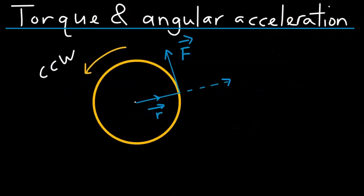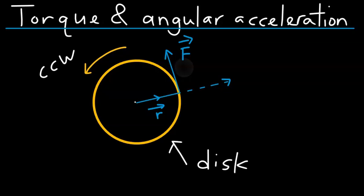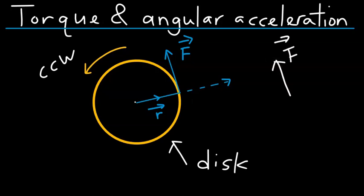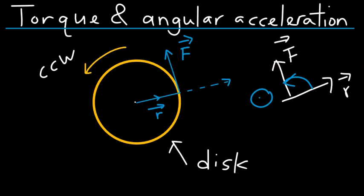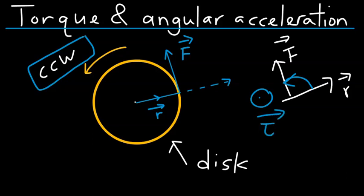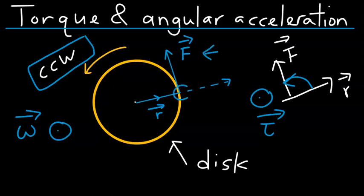Let's look at the following system. You have a disk that is being acted upon by a force F at a point on its rim. The position vector of the point on which the force is acting is R in the direction shown. The combination of this force and this position vector will produce a torque coming out of the board, causing the disk to rotate in a counterclockwise manner. Since the spinning is counterclockwise, the angular velocity of this disk is also coming out of the board.